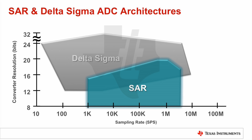SAR ADCs usually have very low power consumption, making them suitable for use in battery-powered applications. In addition, power consumption scales with sampling rate. This means ultra-low power consumption is achievable when slow sampling rates are used.